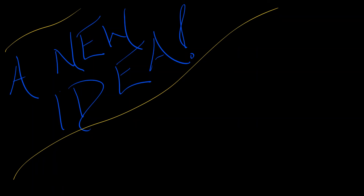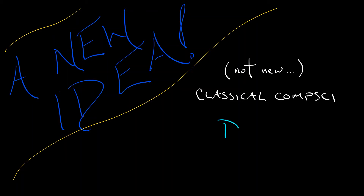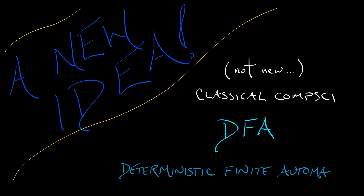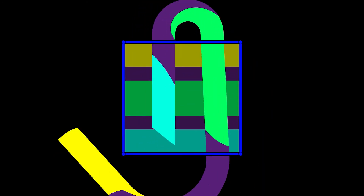This is going to involve a new idea — well, not really a new idea. This is classical stuff that comes straight out of computer science and language theory. These are DFAs, or deterministic finite automata. So let's remember what that map does: how it squeezes, stretches, and bends around with respect to those three strips.